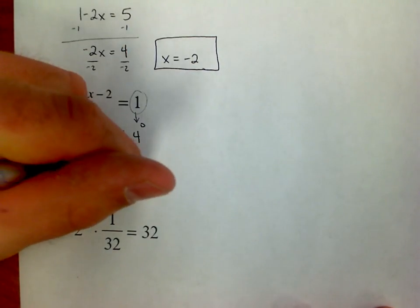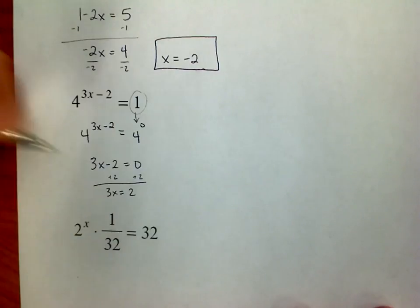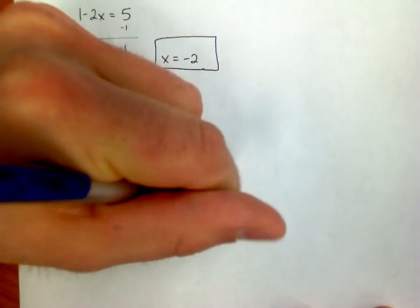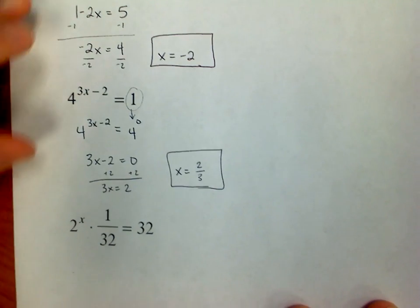Let's add the 2 to both sides. That gives me 3x is equal to 2. And when I divide out the 3, that gives me x is 2 thirds.